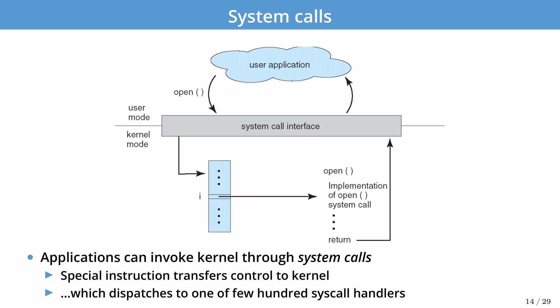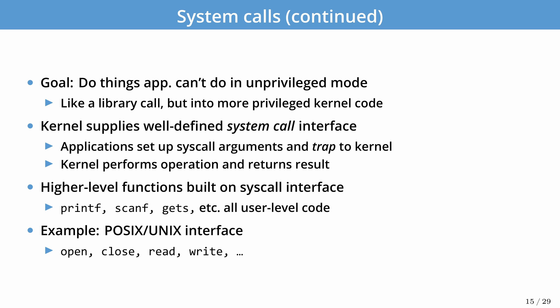Typically in most OSes there are only a few hundred system calls implemented in the kernel, and everything is built on top of that. The goal of system calls is to handle things that can't be completed in unprivileged mode — opening files, accessing hardware resources. We have higher-level functions like printf, scanf, and gets, which are user-level code built on top of simpler calls like read and write. In Unix and in OS 161, open, close, read, and write are examples of system calls.